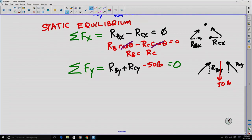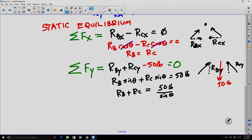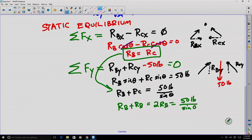RBy can be replaced by RB sin θ, and RCy can be replaced by RC sin θ because they're the same angles. Set that equal to 50 pounds. If the angles are the same, RB + RC equals 50 pounds divided by sin θ. We've also learned that RB and RC are equal, so 2RB = 50 pounds / sin θ.